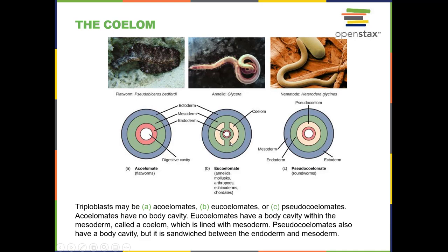One way to think about it: if you were a tiny individual standing inside the coelom of a eucoelomate, you would look up and all around and see only mesoderm — that's a true coelom. If you were standing in a pseudocoelom, you would be able to see both endoderm and mesoderm surrounding you. It's not about one being better than the other — it's just different structures, and based on the structure or absence of the coelom, we classify animals into these groups.